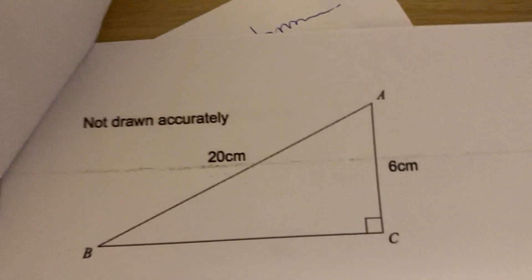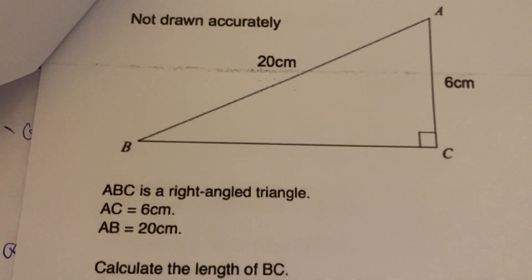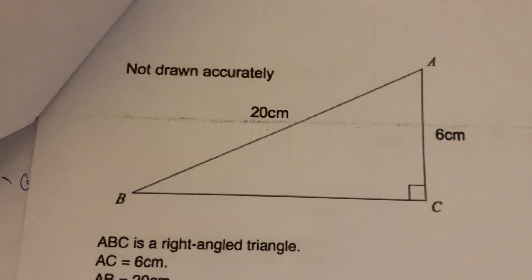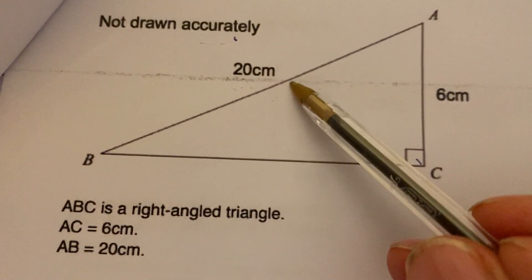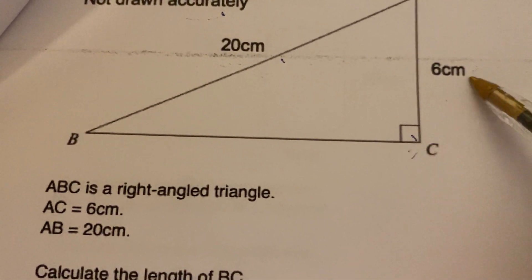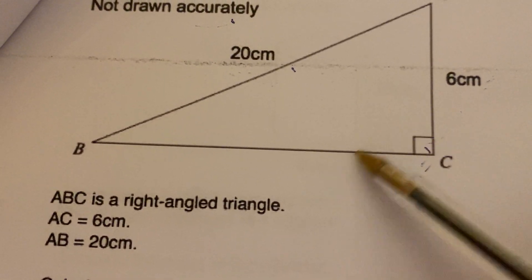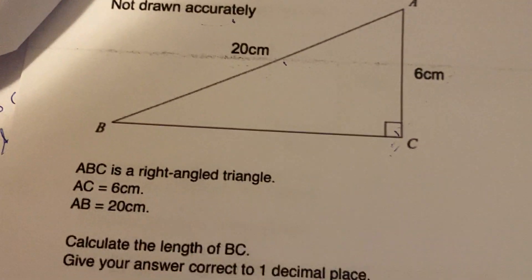Okay, now we get these ones here - a bit of trig. We like a bit of trig, don't we? So here we go: is it trig or is it Pythagoras? First of all, not drawn accurately, please remember that. This is the right angle, so that's the hypotenuse.